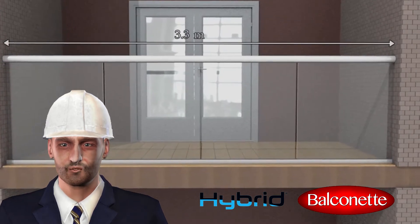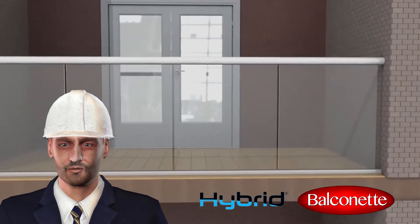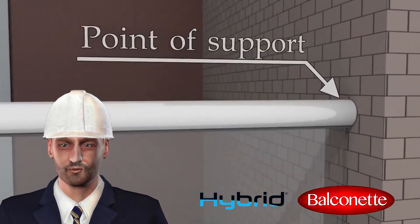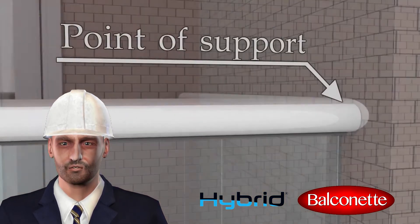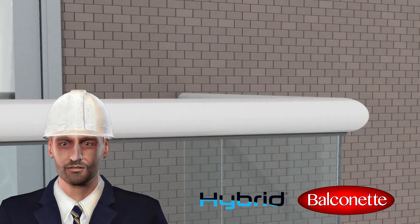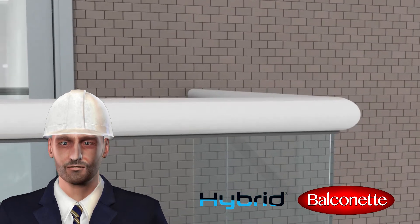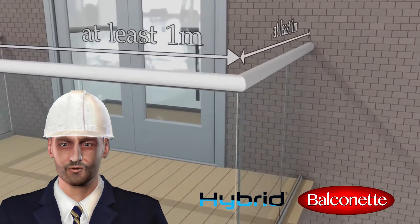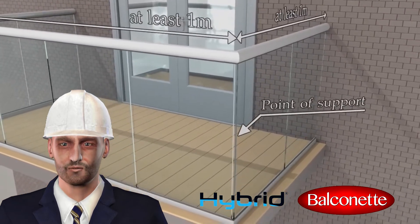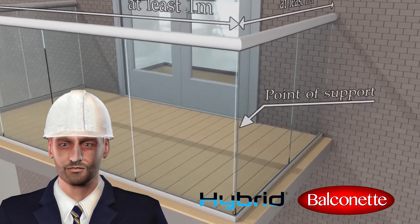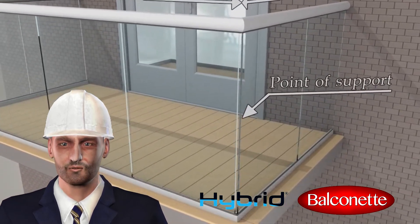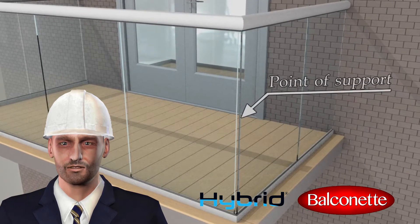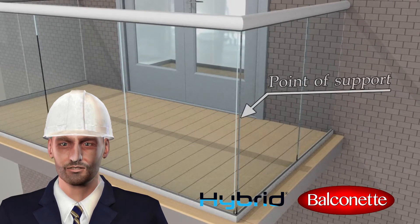The wall fixing is referred to in the report as a point of support. Due to the way the system works and the way the glass is bonded to the rails, a corner of 90 degrees where the sides are at least 1m long is also considered a point of support, and therefore the same maximum span rule applies to such a corner.